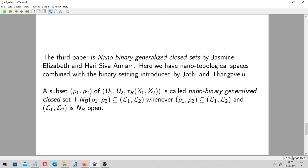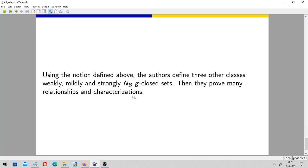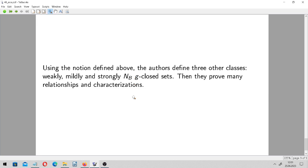So, a subset of such space is called nano-binary-generalized-closet. If its closure, they use this symbol, this specific symbol overline to denote closure, the set is always contained in L1, L2, another binary set, whenever the set is contained in this L1 and L2, and this one is open. Okay, this is taken from typical topological spaces. This class, as far as I know, it has been studied in other settings too, maybe in intuitionistic or in soft sets. Be as it may, using the notion defined above, the authors define three other classes, weakly, mildly and strongly NBG-closet sets. And then they prove many relationships and characterizations, as always.